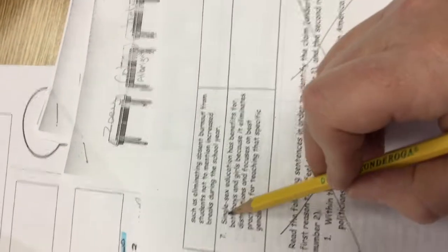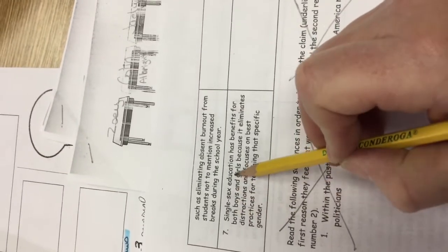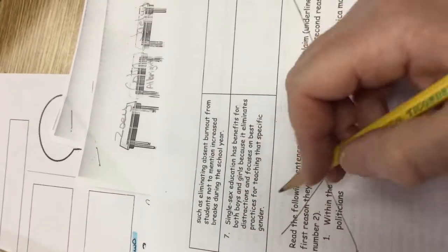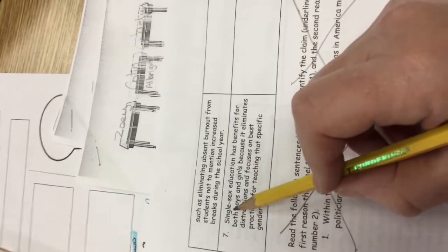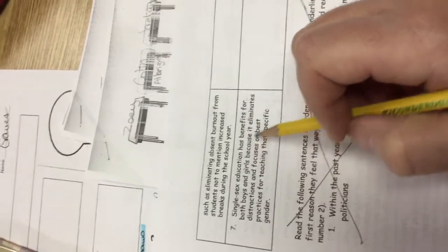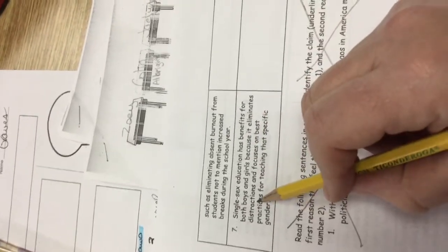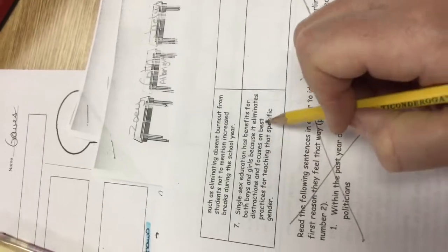Now let's go to the back side and let's do number seven. Number seven is talking about single-sex education. What they mean is separating and having all classes for boys and all classes for girls. Single-sex education has benefits for both boys and girls because it eliminates distractions and focuses on best practices for teaching that specific gender.